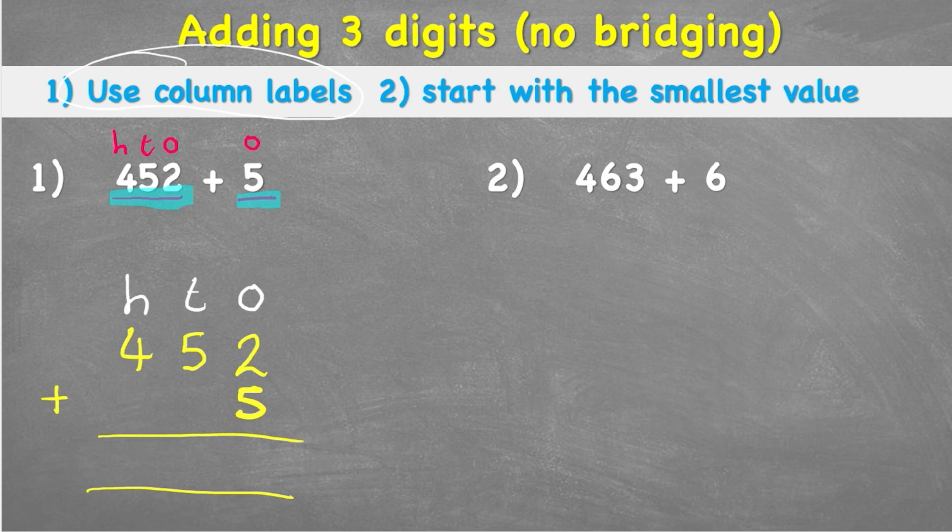Now I can look at my second instruction. It says start with the smallest value. So where's the smallest value here? Well, our smallest value is our 1s. 1s are smaller than 10s and are smaller than 100s. So all I'm going to do is I'm going to add 2 to 5.